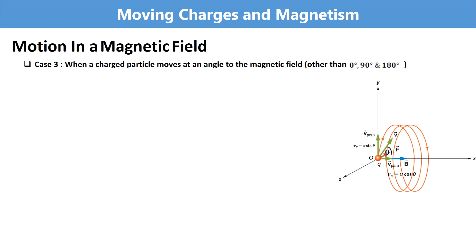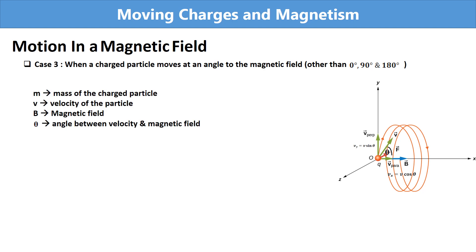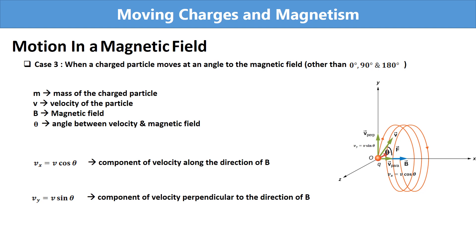In the figure, we can see a charged particle q moving in a magnetic field with a velocity v. The magnetic field is in the x direction and θ is the angle between velocity and magnetic field. Here we are considering any general value of θ — that is, any value other than 0, 90, or 180 degrees.